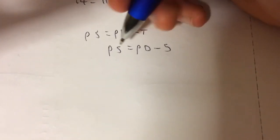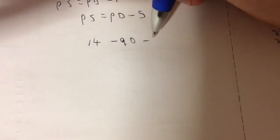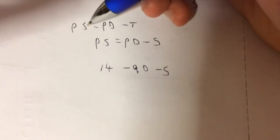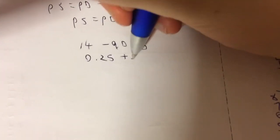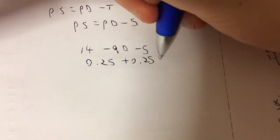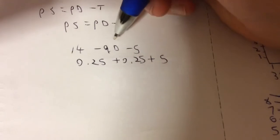So you get that PD minus 5, which is 14 minus QD minus 5, and then swap it over to make it the PS. So that's going to be 0.25 plus 0.25Q plus the 5 tax, because change the side, change the sign.